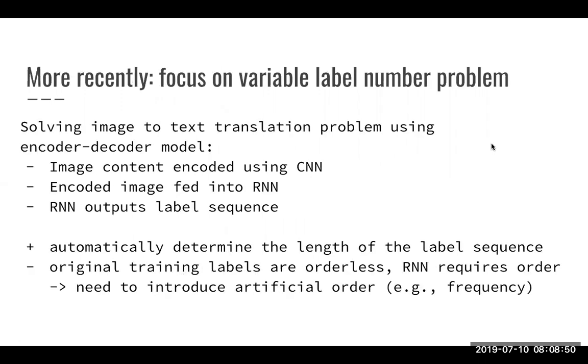More recently people have been focusing on the variable label number problem and they did this by treating the image annotation problem as an image to text problem. You encode the image using a CNN, you feed the encoded image to an RNN and that RNN outputs the label sequence and this way you can automatically determine the length of a label sequence but the training labels are orderless and an RNN of course requires an order. So what people did is they introduced an artificial order based on for example the frequency to solve this issue but this is also kind of suboptimal because you introduce an order that is not really there and or isn't really important and doesn't exist. And that's why the authors say again good effort, thank you, but this is a suboptimal solution.